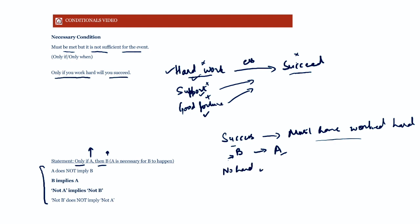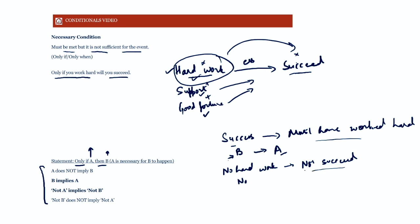If I know that you did not put in the hard work, then I know for sure — it doesn't matter what else you do — you will not succeed. Because hard work is essential to succeeding; if you do not put in the hard work, you will not succeed. So not-A implies not-B: if A does not take place, B will also not take place for sure. Both B implies A and not-A implies not-B are valid for a necessary condition.